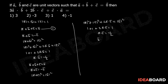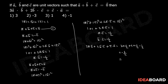Similarly, b bar dot c bar equals minus 1 by 2. Therefore, 3 a bar dot b bar plus 2 b bar dot c bar plus c bar dot a bar equals 3 into minus 1 by 2 plus 2 into minus 1 by 2 plus minus 1 by 2. That equals minus 6 by 2, that is minus 3.